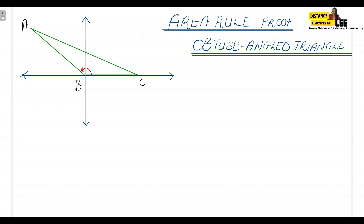An obtuse angle is an angle that is greater than 90 degrees but less than 180 degrees. So we can see that this angle — angle B — is more than 90 degrees but less than 180 degrees, which means we are dealing with an obtuse angled triangle.